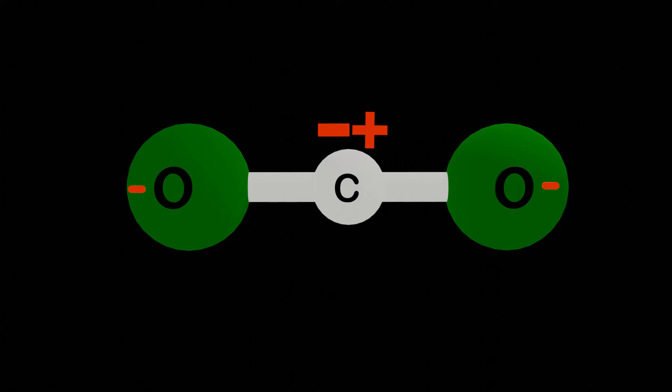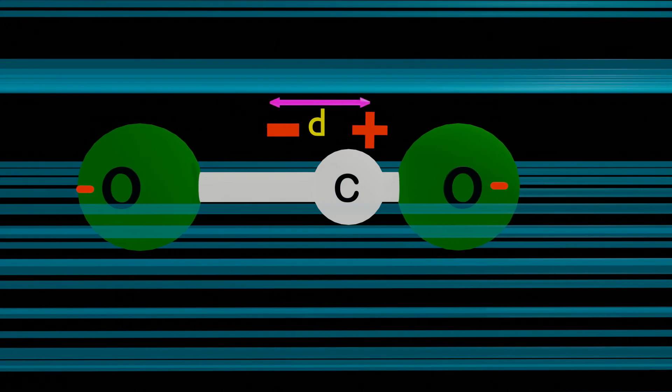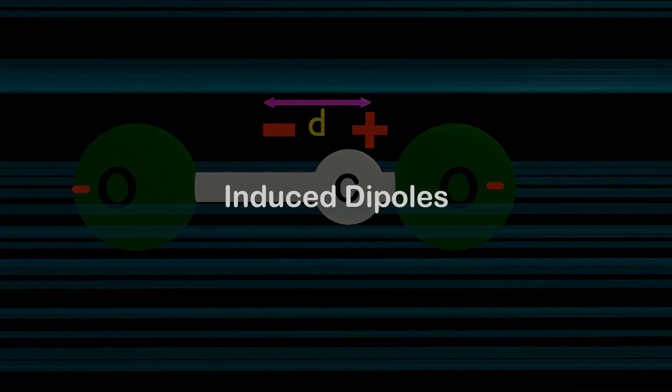But when a CO2 molecule is placed in an electric field, the center of charge of the electronegative oxygen atom shifts, creating some separation of charges. In this way, CO2 molecules behave like electric dipoles under the influence of an electric field. And these types of dipoles that behave like electric dipoles under the influence of an electric field are called temporary or induced dipoles.